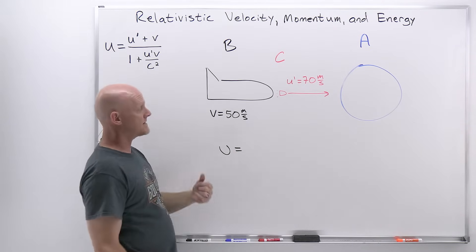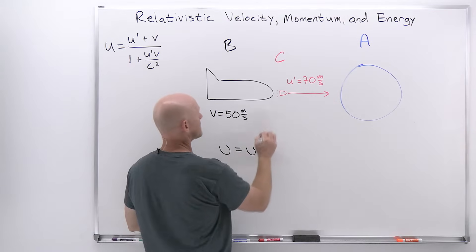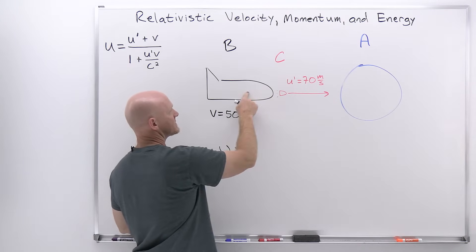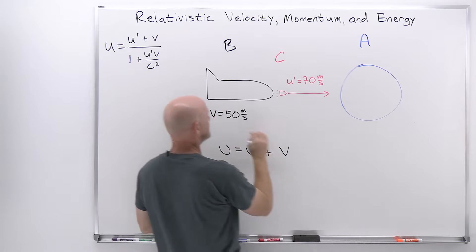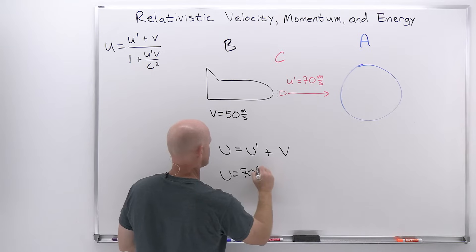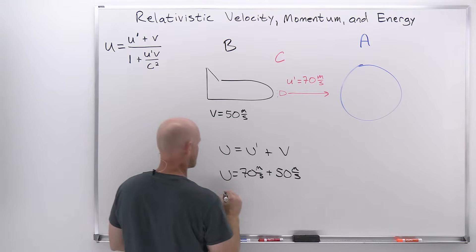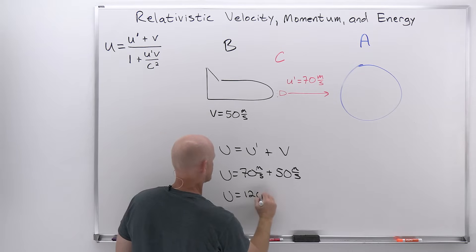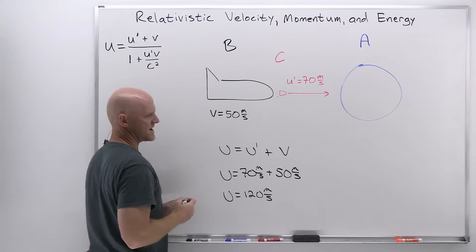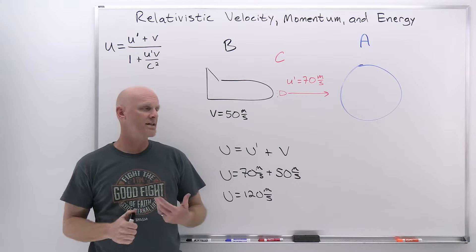It's a fairly straightforward calculation here. U, the relative velocity of the projectile relative to the Earth, is simply going to equal U', the relative velocity of the projectile to the spacecraft, plus V, the relative velocity of the spacecraft to the Earth. That's going to get us 70 meters per second plus 50 meters per second, which is going to come out to 120 meters per second. Fairly straightforward calculation for relative velocity from our Galilean perspective.